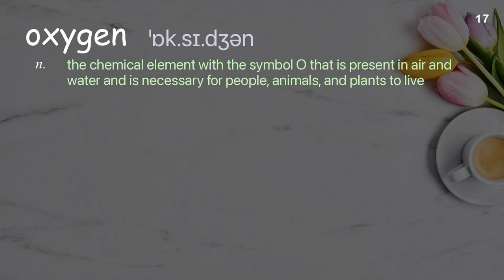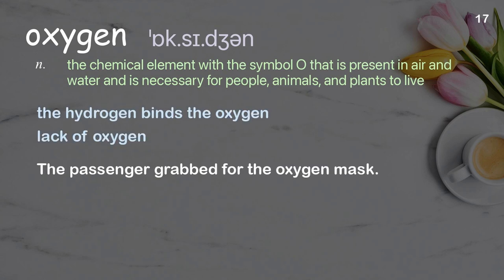Oxygen: the chemical element with the symbol O that is present in air and water and is necessary for people, animals, and plants to live. Examples: the hydrogen binds the oxygen, lack of oxygen. The passenger grabbed for the oxygen mask.